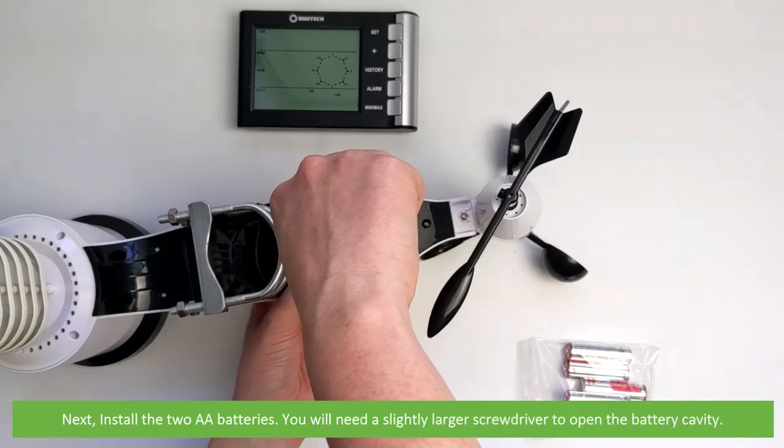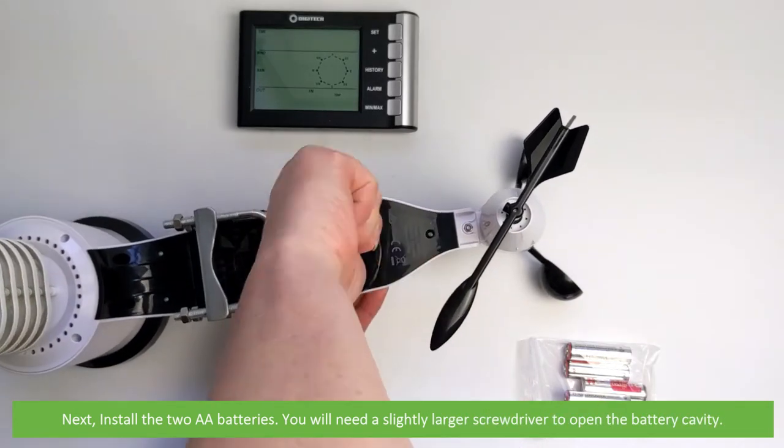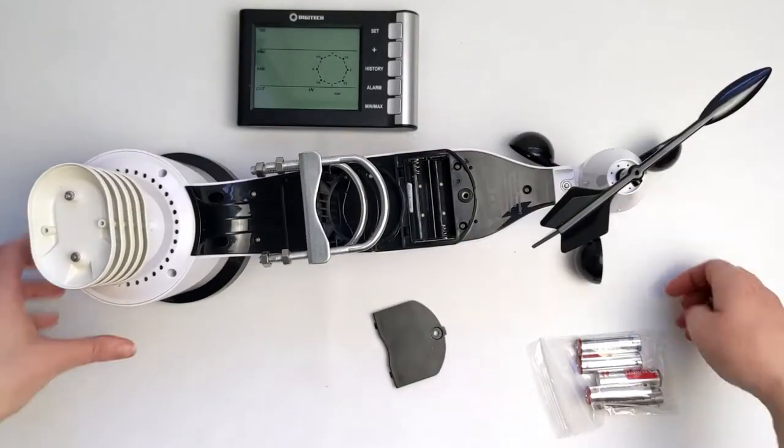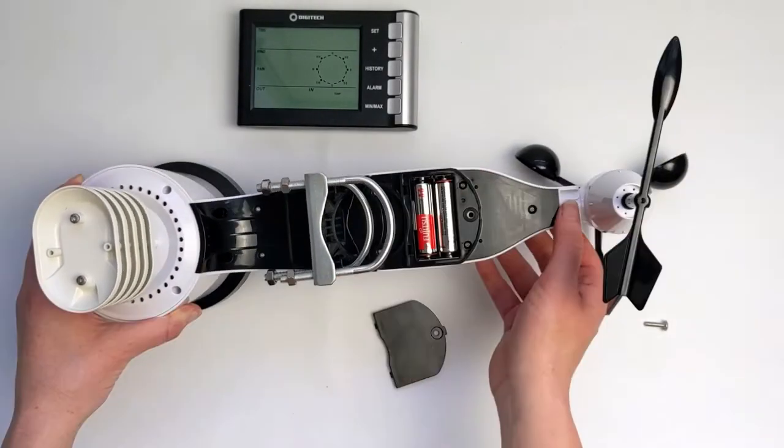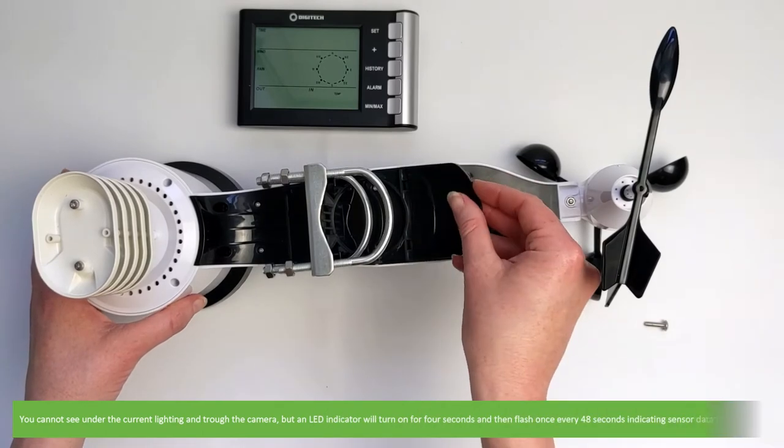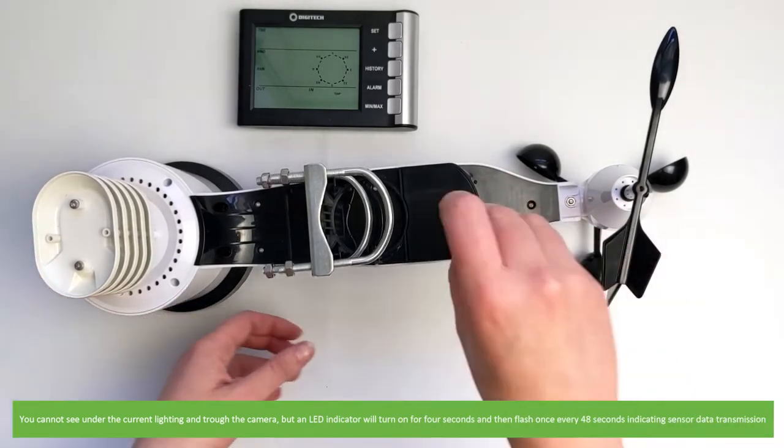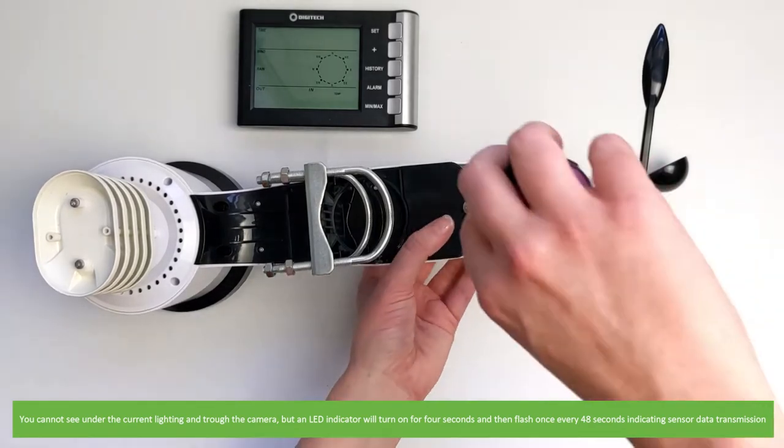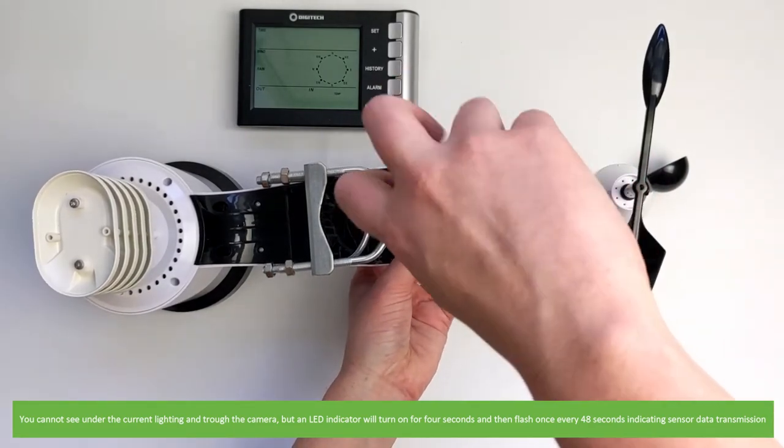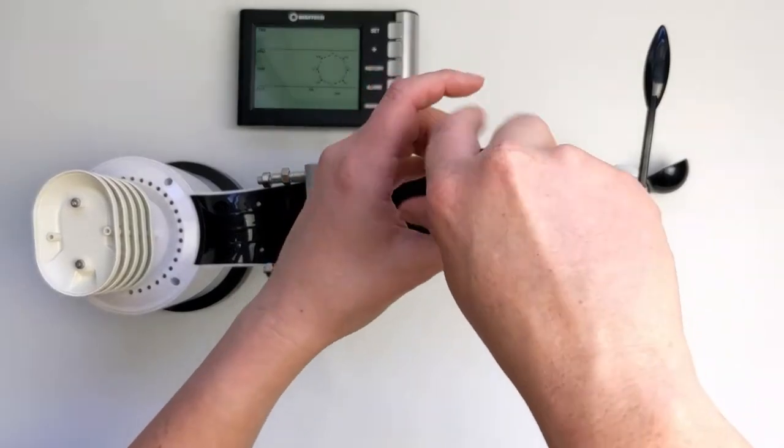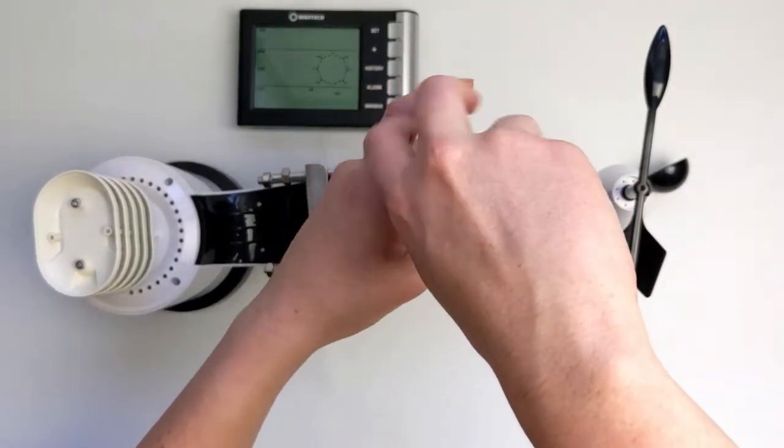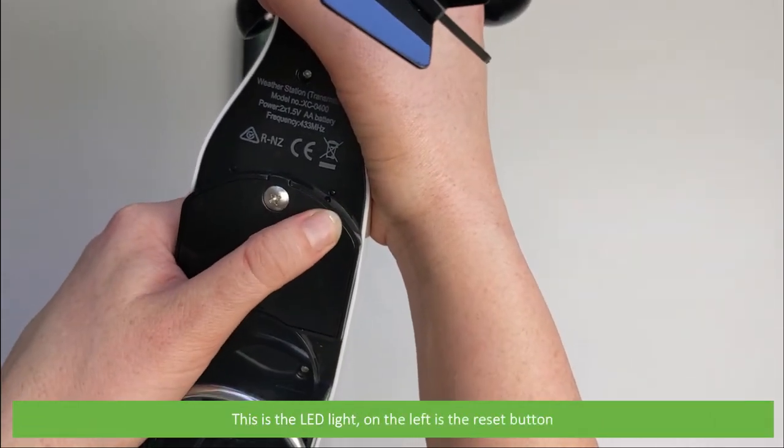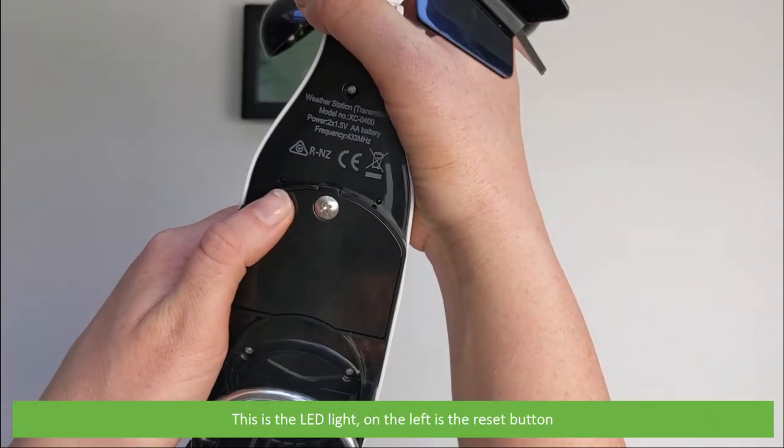Next, install the two AA batteries. You will need a slightly larger screwdriver to open the battery cavity. You cannot see under the current lighting or through the camera, but an LED indicator will turn on for 4 seconds and then flash once every 48 seconds indicating sensor data transmission. This is the LED light and on the left is the reset button.